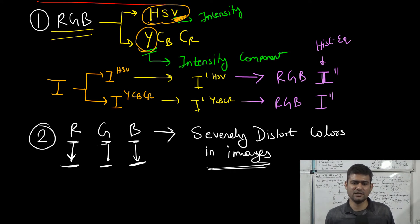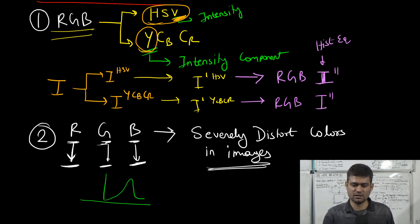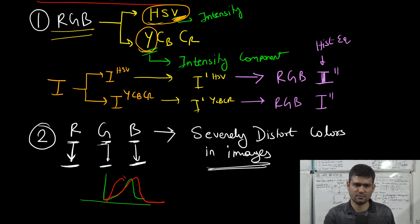The R, G, and B channels would have different histograms. For example, the R histogram can look one way, the green histogram another way, and the blue histogram yet another shape — all distinct from each other.